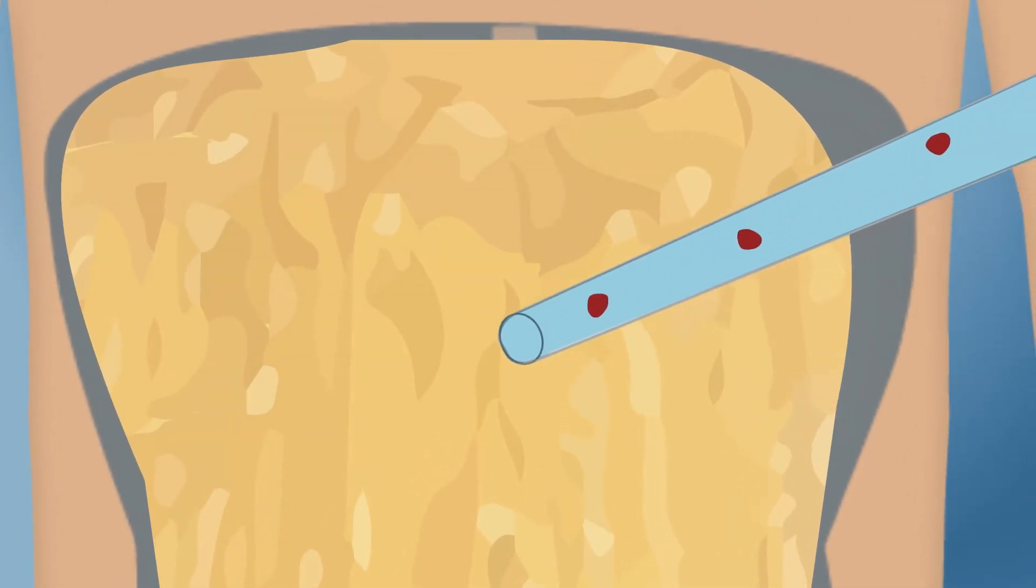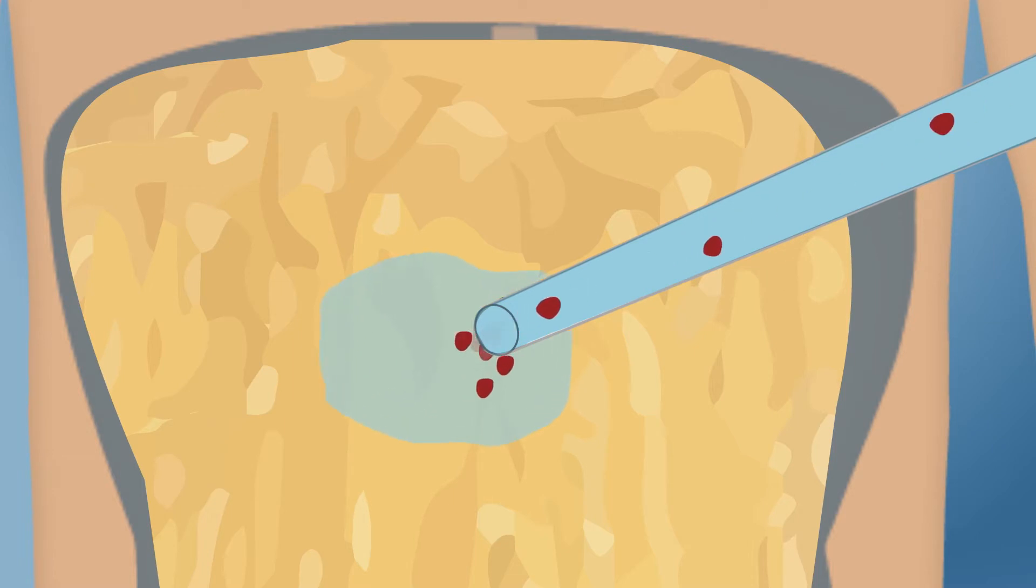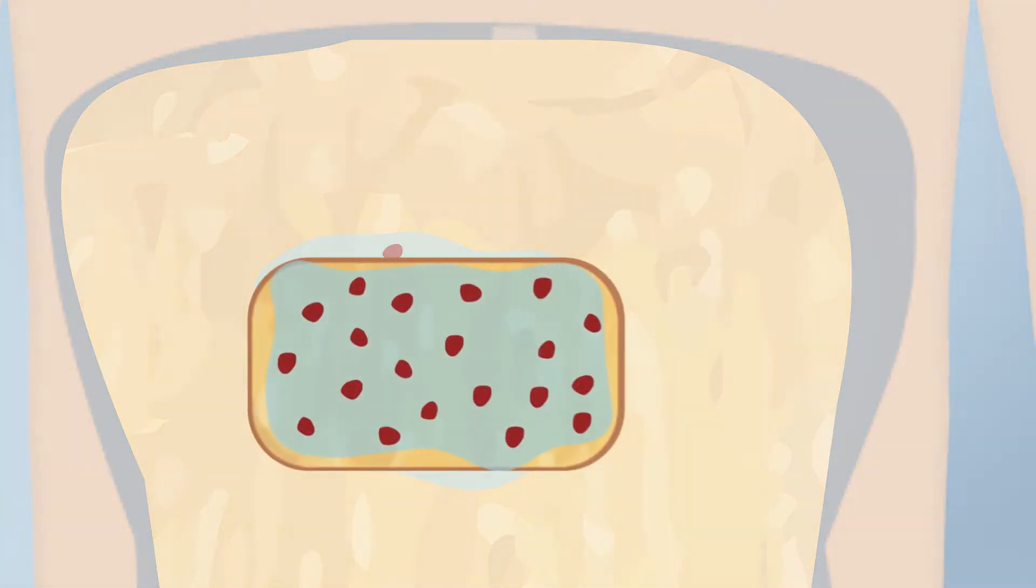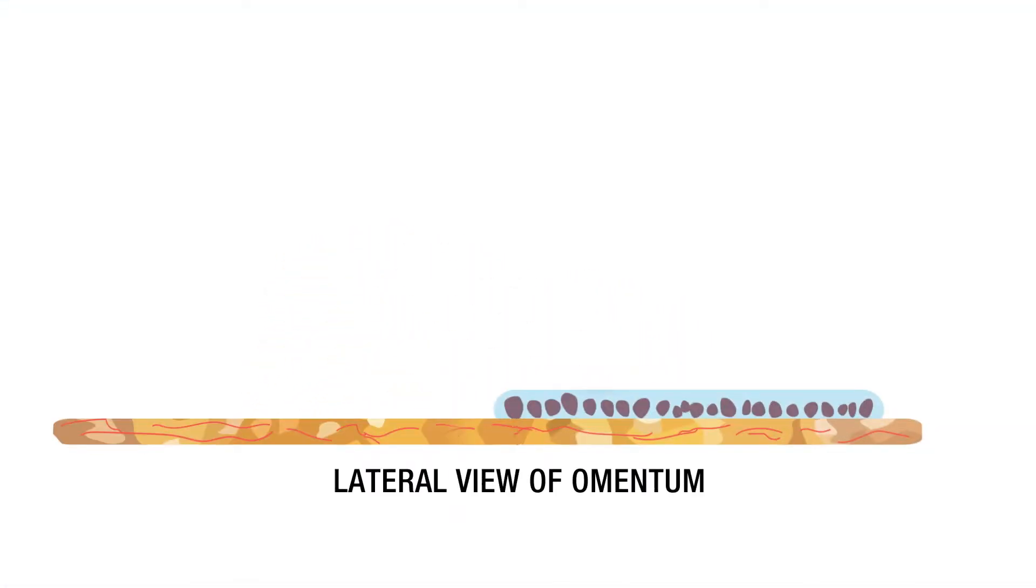As part of a new clinical trial, islets are combined with the patient's own plasma, the liquid part of the blood, and the mixture is applied onto the omentum. Then they're adding a commonly used enzyme called thrombin to create a gel-like substance that sticks to the omentum and holds the islets in place, forming what scientists call a biodegradable scaffold.